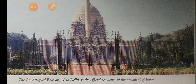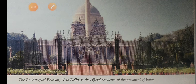The President is elected for a term of 5 years and can be elected for a second term. The official residence of the President is the Rashtrapati Bhavan, and the official residence of the Governor is the Raj Bhavan.